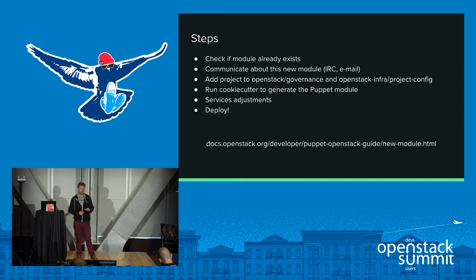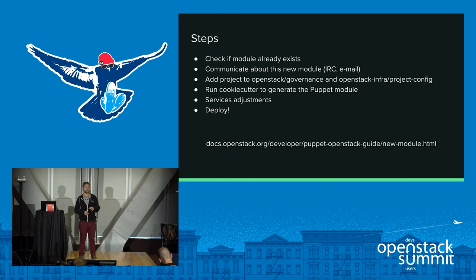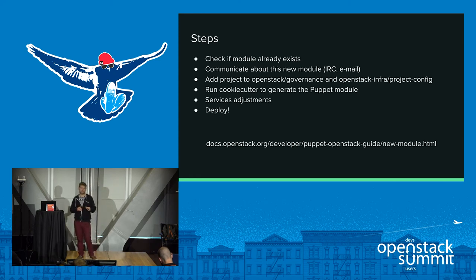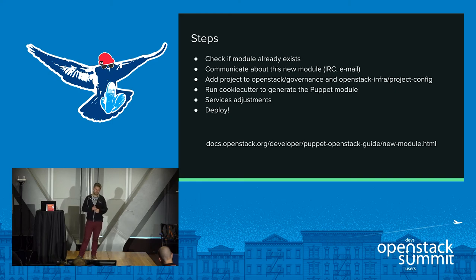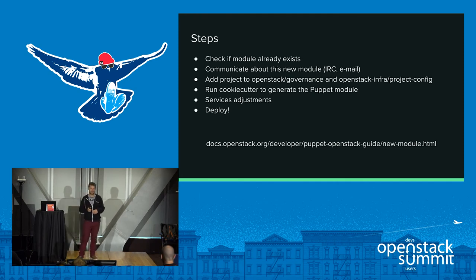The most important thing is to create the repository. For that you need to submit a patch in OpenStack Infra. If you don't know how, don't worry — we have people on the team who do this very often and can even do it for you. This creates the CI jobs, the Gerrit permissions, and so on. That's the first step before writing code. Once you have the repo, you run a tool called cookie cutter, which generates the basic Puppet module structure for you — so you don't have to write everything from scratch.